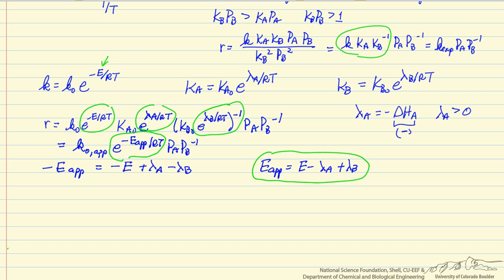So the apparent activation energy can be less than or even greater than the surface reaction activation energy E, depending on the relative values. Since we said B is strongly adsorbed relative to A, the heat of adsorption for B is greater than the heat of adsorption for A, and therefore we would expect E_apparent to be greater than the surface reaction activation energy E.